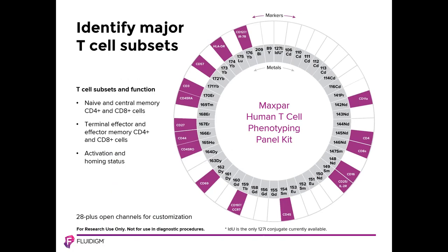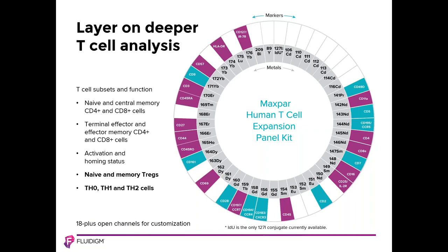I'll now show you how our panel kits can be easily combined into larger panels. This example is the Maxpar Human T-Cell Phenotyping Panel Kit, which includes 16 markers strategically spaced on the 44 available metal channels. This panel by itself identifies naive and central memory subsets, terminal effector and effector memory subsets, as well as homing and activation status in both CD4 and CD8 T-cells. Note that there are still 28 available channels. To this 16-marker T-cell phenotyping panel, we can add the 10-marker T-cell expansion panel kit. These added markers enable identification of five additional T-cell subsets — naive and memory regulatory T-cells, as well as TH0, TH1, and TH2 subsets — leaving 18 channels still available.